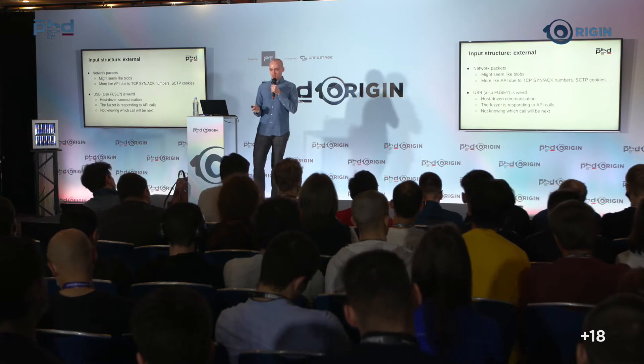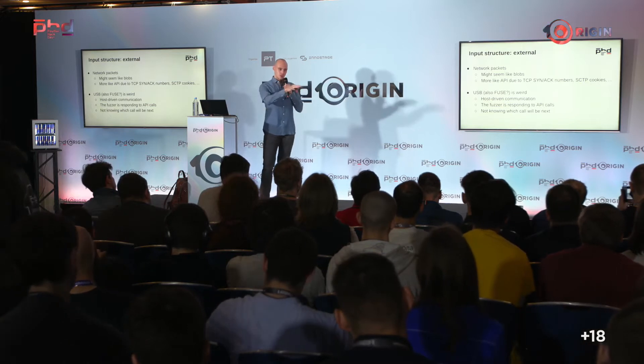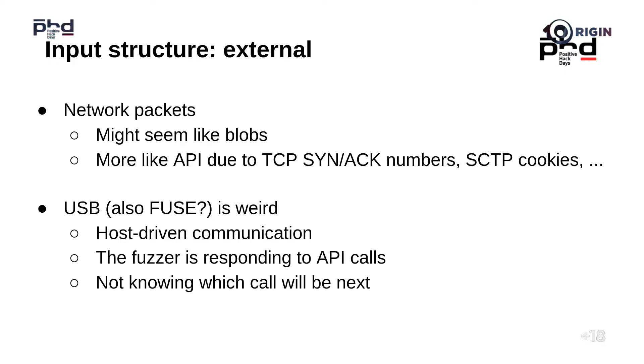Examples include TCP, UDP, SCTP, and many other protocols. When fuzzing USB, it's also quite specific — USB is a strange protocol where everything is generated not by the host. If we want to fuzz USB, we can't just send data to the host. We need to wait for a request from the host and can only reply to that request. We don't know what the next request will be, so USB fuzzing requires a quite specific approach.